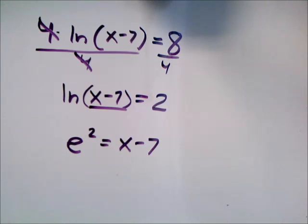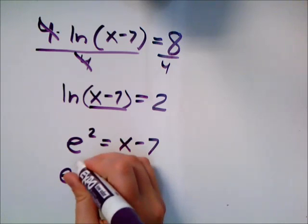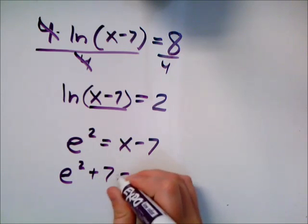So e squared equals x minus 7, so add 7 to both sides. So e squared plus 7 equals x.